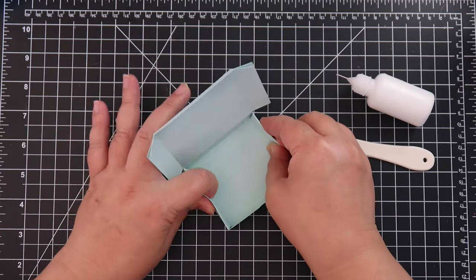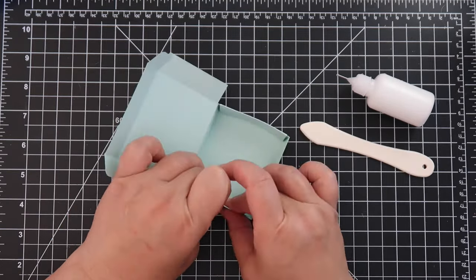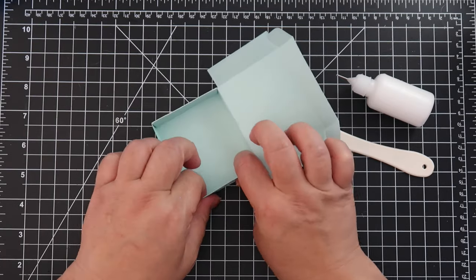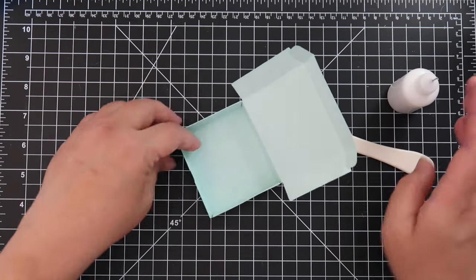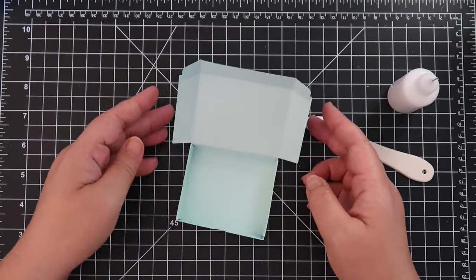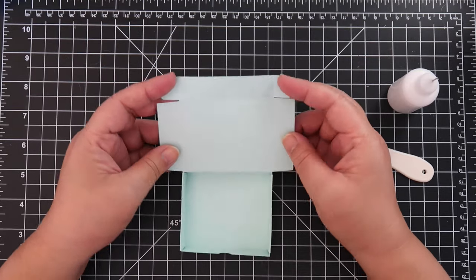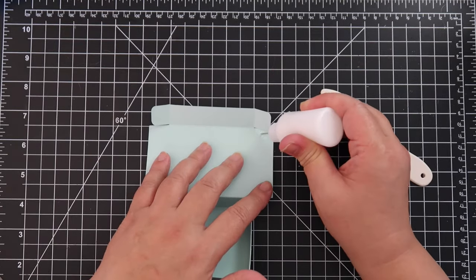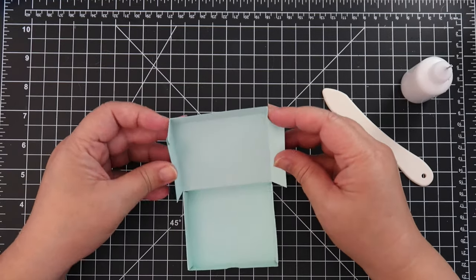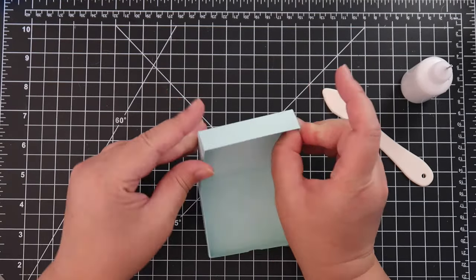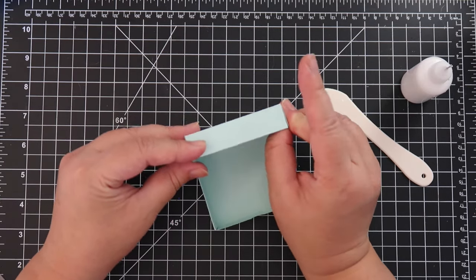I'm using wet glue here, but you can use a strong double-sided tape or a hot glue gun. So now we're going to work on the top of the box and what we'll be doing is we will glue the two small tabs at the top to the inside of the two sides of the box. And that is it.